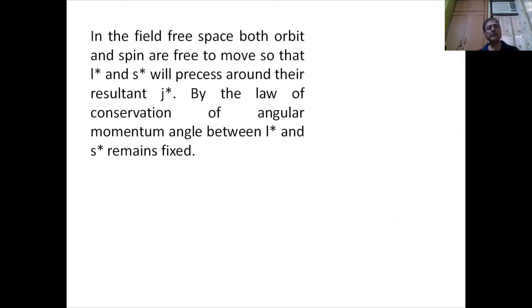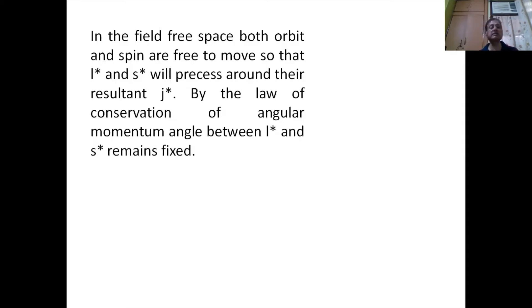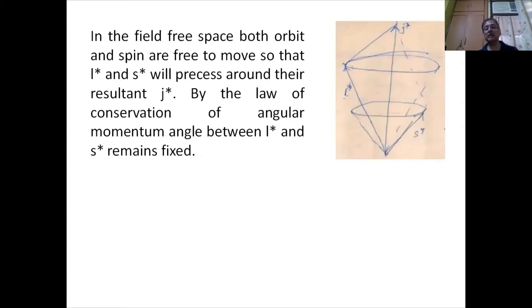Taking a clue from the classical semi-classical model to explain the interaction of spin and orbit in field-free space: when there is no field applied, both orbit and spin are free to move, so the orbital angular momentum l* and spin angular momentum s* will precess around the resultant j*. By the law of conservation of angular momentum, the angle between l* and s* will remain fixed.